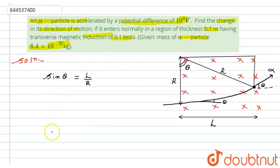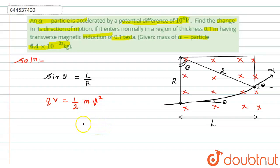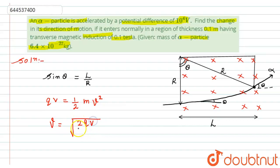The voltage V is given to the particle, so the energy of the particle becomes qV. This energy converts to kinetic energy: qV = ½mv². From this, the speed of the particle is v = √(2qV/m).